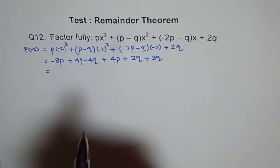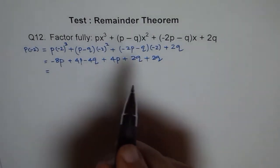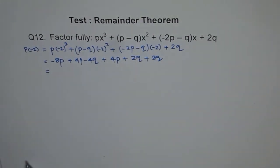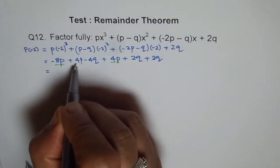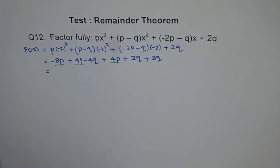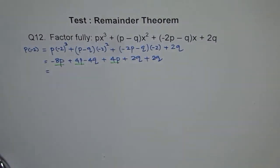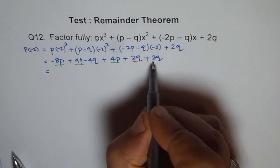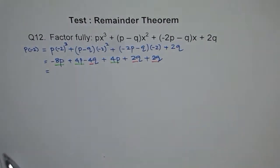Now let's combine the terms: minus 8p plus 4p plus 4p, so that becomes 0. And our q's: plus 2q, plus 2q is 4, and minus 4q, so we get 0. That means p of minus 2 is 0, that means x plus 2 is a factor.